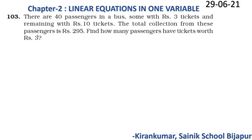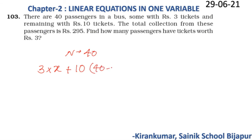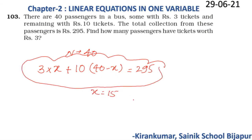Question 103: There are 40 passengers in a bus — some with ₹3 tickets and the remaining with ₹10 tickets. The total collection from these passengers is ₹295. Find how many passengers have ₹3 tickets. Let x passengers have ₹3 tickets; then 3x + 10(40 − x) = 295. Solve to get x = 15.